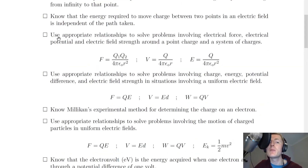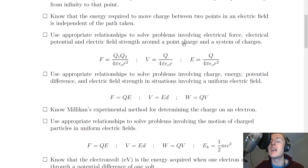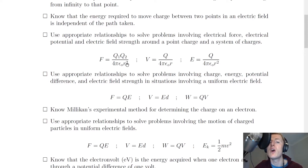Next you need to be able to use appropriate relationships to solve problems involving electrical force F, electrical potential V, and electric field strength E around a point charge and a system of charges. We have Coulomb's inverse square law: F equals Q1 Q2 over 4π ε₀ r squared; the equation for electrical potential at a point: V equals Q over 4π ε₀ r; and the electric field strength equation: E equals Q over 4π ε₀ r squared.